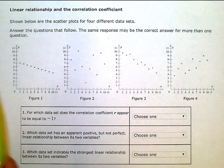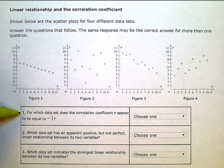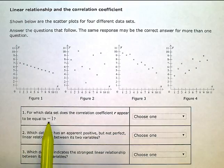So I have four different scatter plots here: figures 1, 2, 3, and 4. My first question is, for which data set does the correlation coefficient r appear to be equal to negative 1?